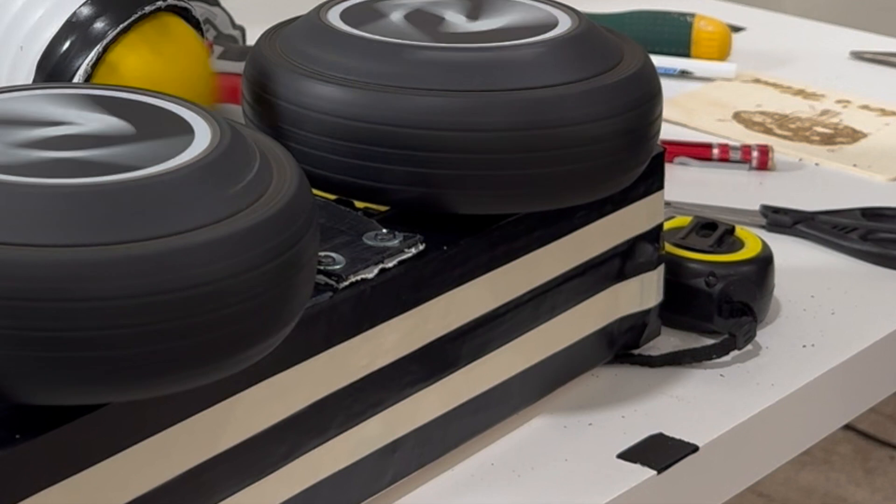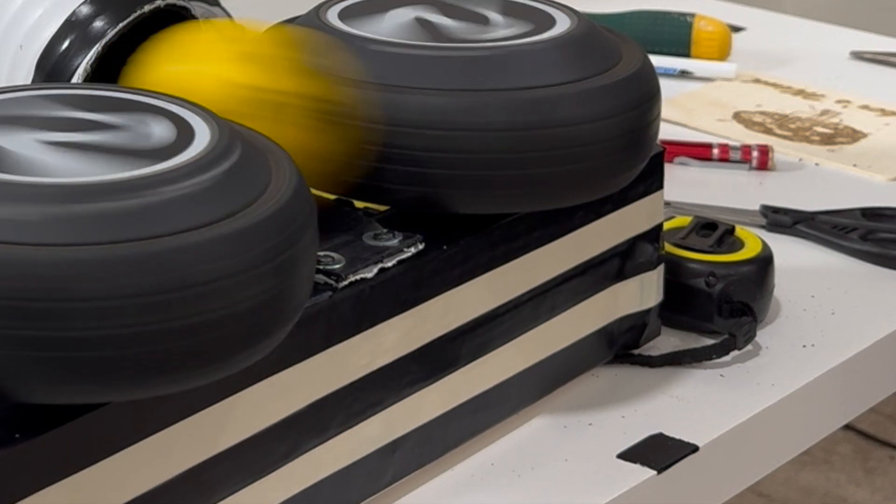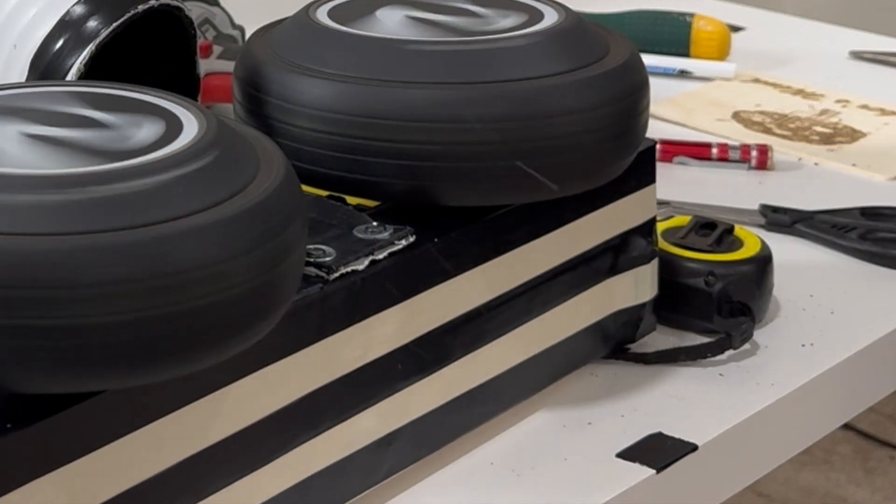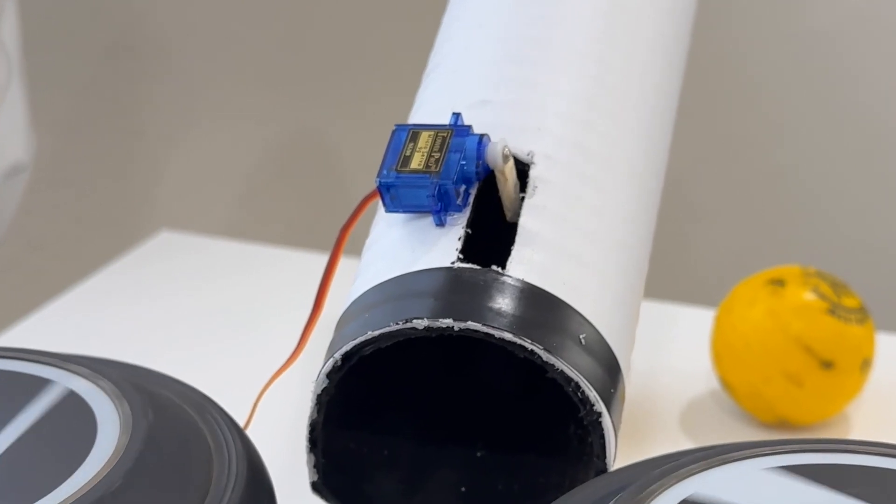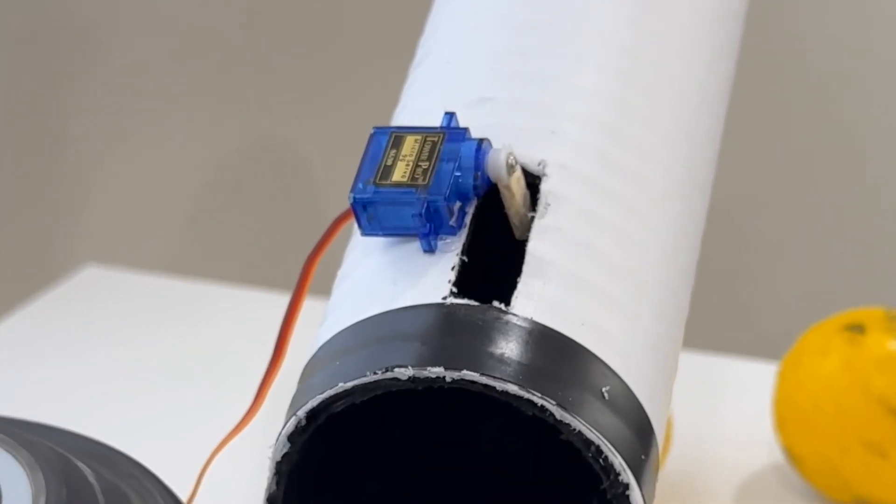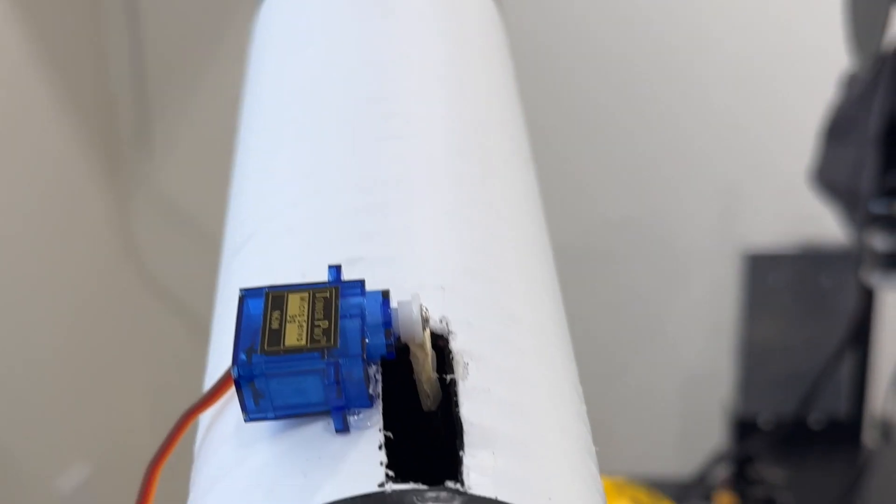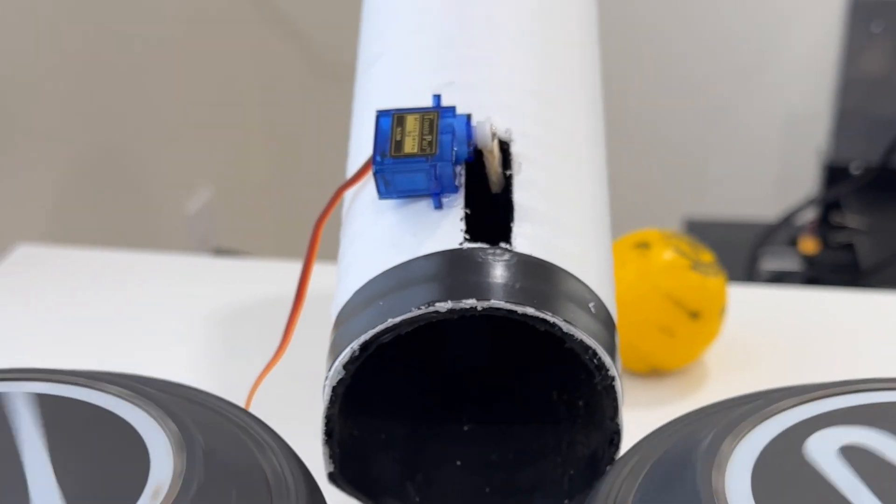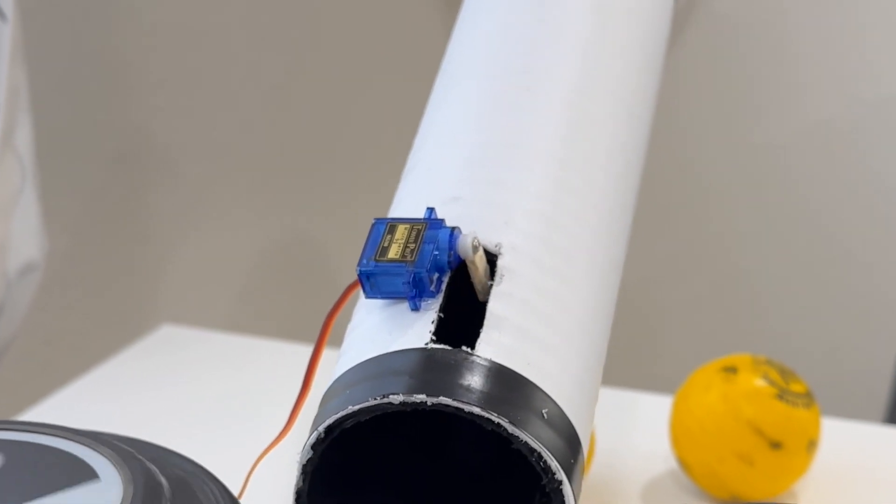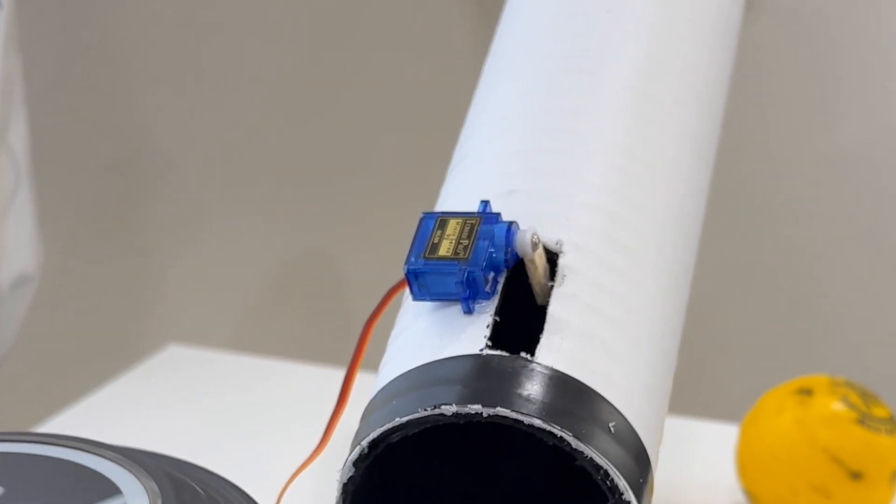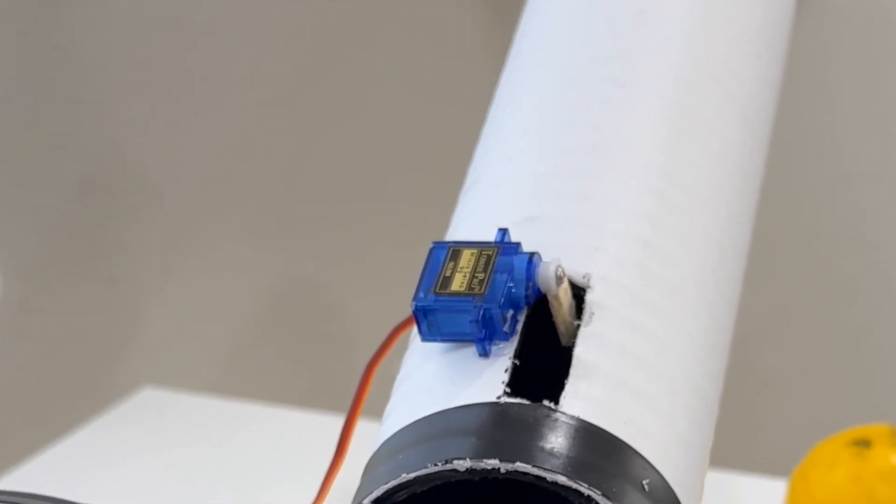Now the servo motor arm needs to make another quick turn to go back to its original 90-degree position to stop the next ball from rolling downwards. So if I can repeat the above steps in an interval, then this will be an automatic ball dispensing system.